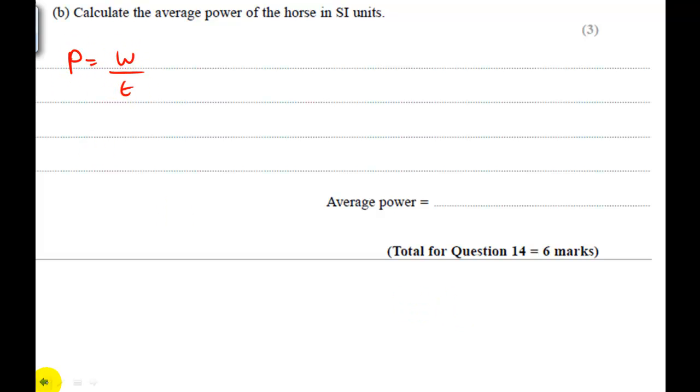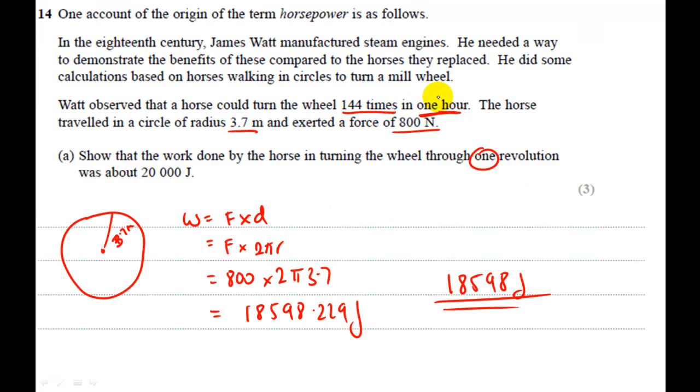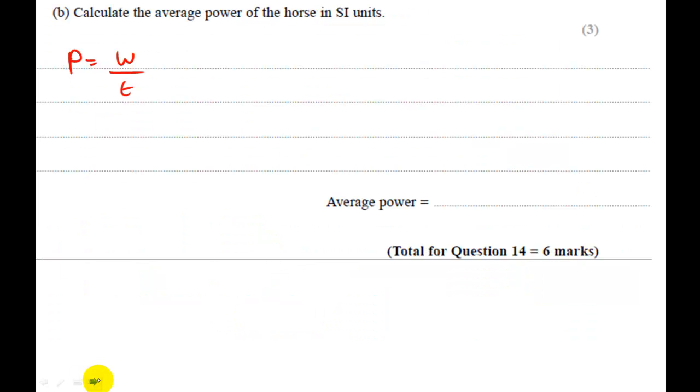Okay, so what I'll need is I've got a time of one hour. But in that one hour, the horse does 144 times around the circle. So the horse does 144 times this amount of work. So I'm going to do 144 multiplied by 18598 joules and divided by the time it took, which is one hour, 60 times 60. You know that's 3,600.